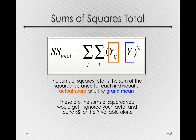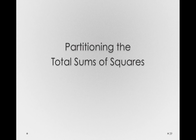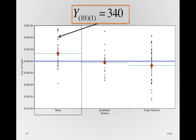What we're doing in an analysis of variance is partitioning those sums of squares. That's what allows us to understand whether the treatment deviations are big or small relative to the error deviations. Let's do this graphically to show that all we're doing is describing the location of a person as a sum of two parts — one part error and one part treatment. Let's go back and talk about Tom, who is Y-10-1. Tom paid $340 and flew on Delta Airlines.